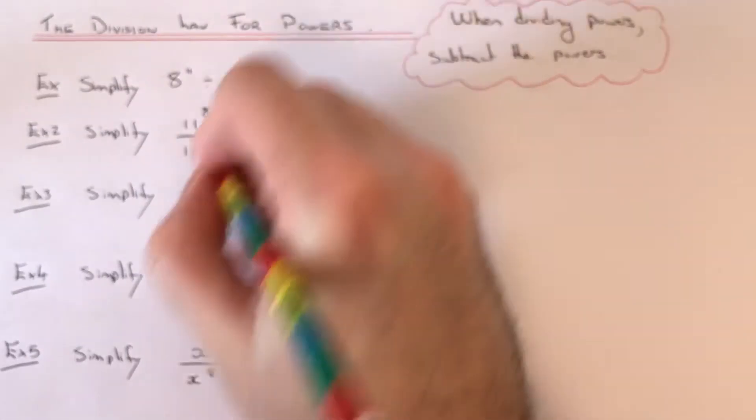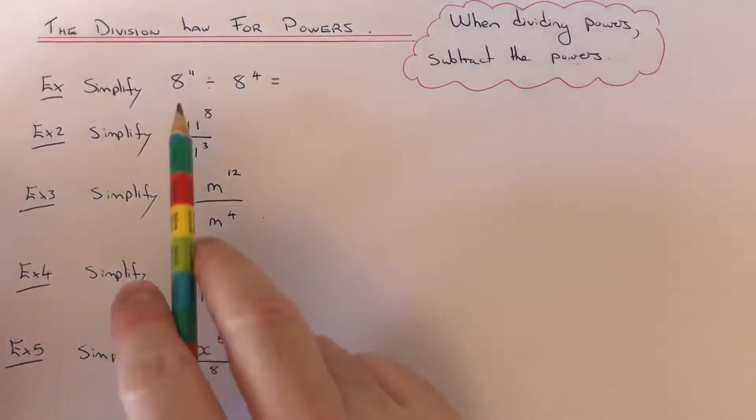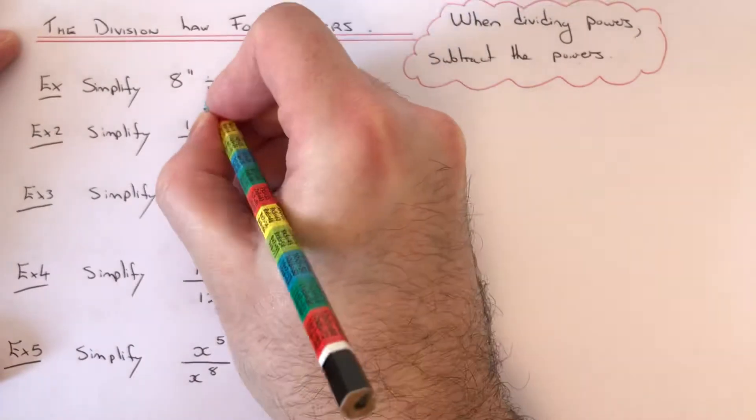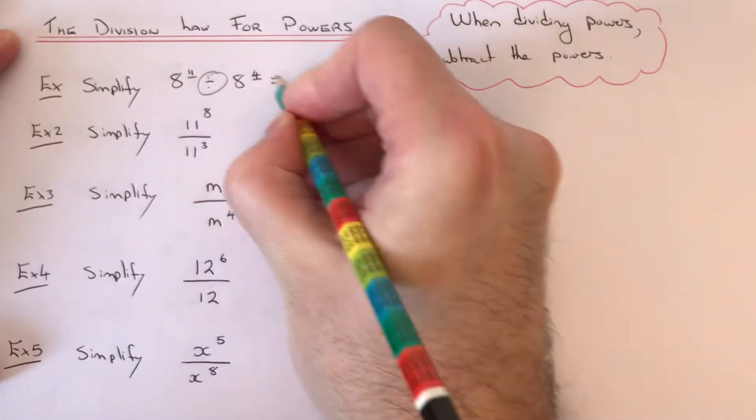Let's have a look at our first example. We've got 8 to the power of 11 divided by 8 to the power of 4. Since we're dividing, we take the powers at the top away.